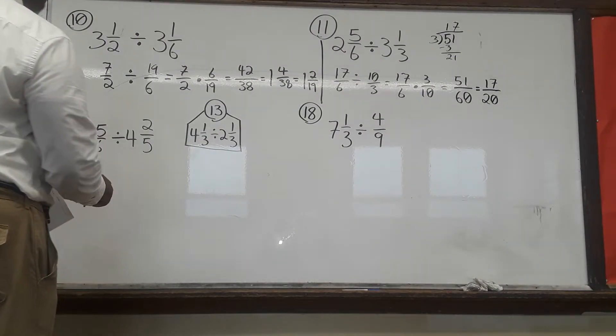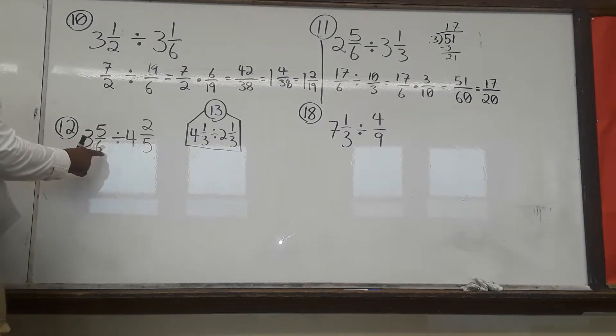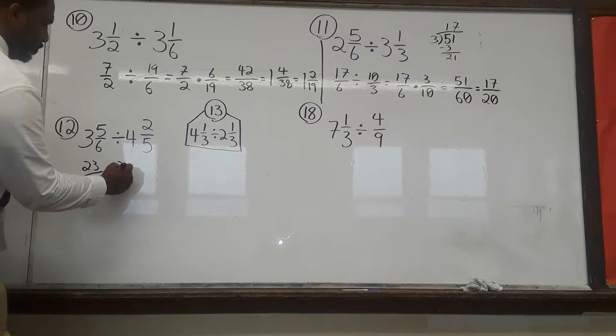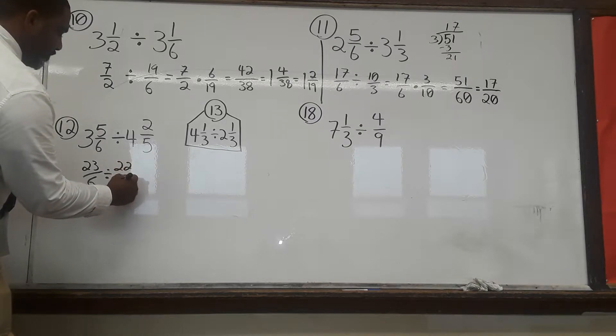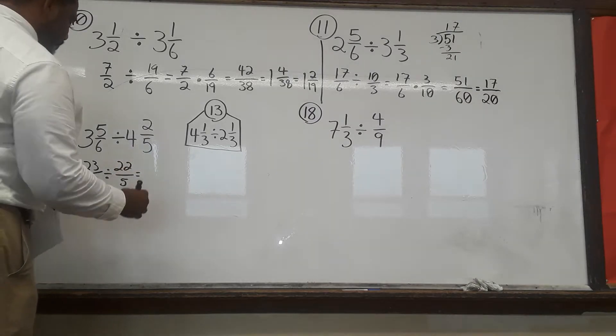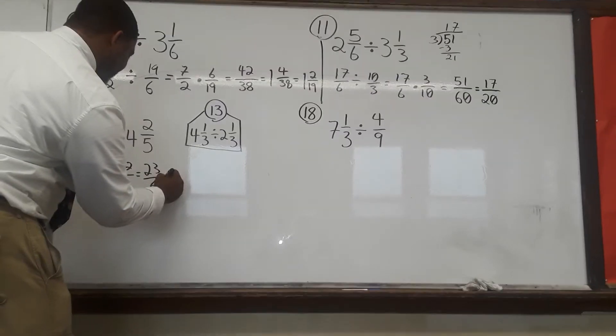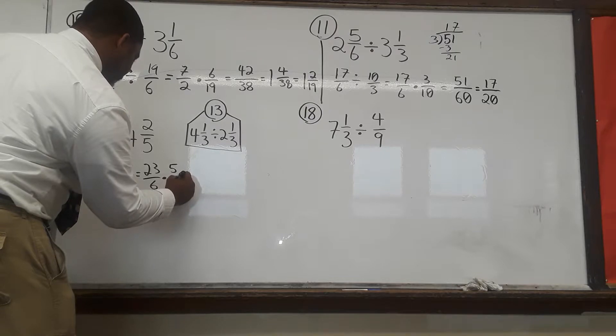Number 12, same process. Denominator times the whole number plus the numerator. So, 6 times 3 gives us 18 plus 5 gives us 23 over 6. Divided by 22 over 5 equals 23 over 6 times 5 over 22.